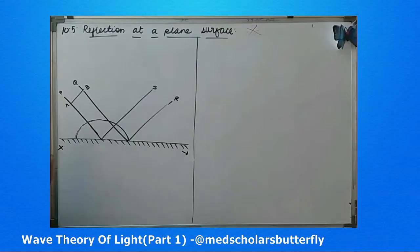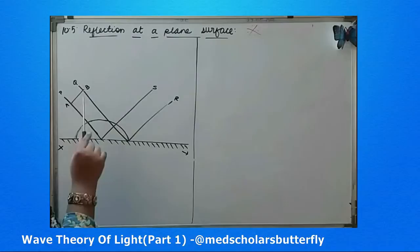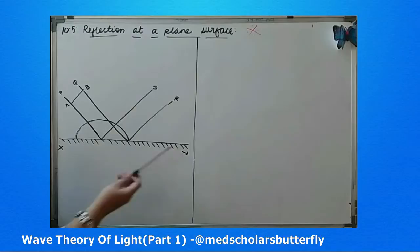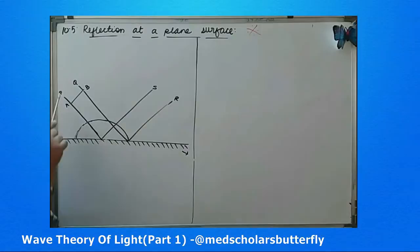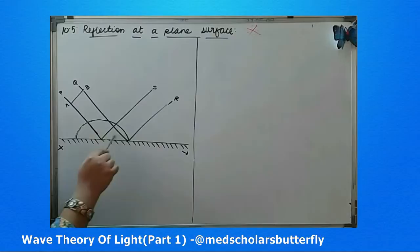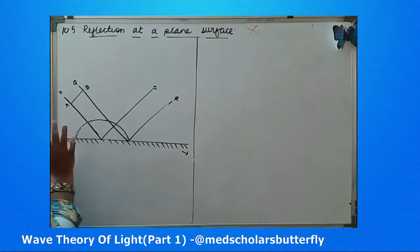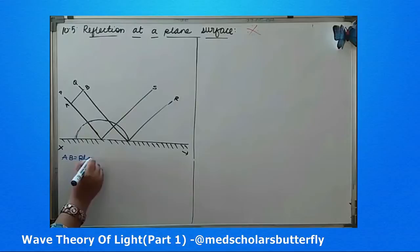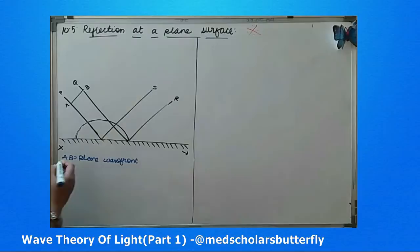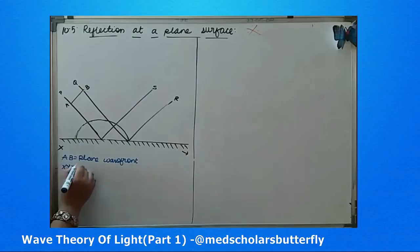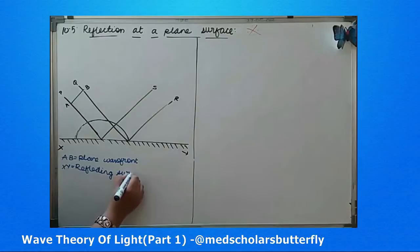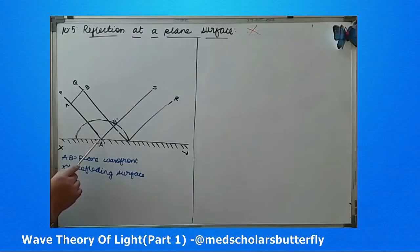Reflection at a plane surface: this is a plane wavefront and PANQB are parallel rays reaching XY, which is the reflecting surface. This is the incident light and this is the reflected light. The incident light will reach the reflecting surface and get reflected. AB is the plane wavefront and XY is the reflecting surface. From A' and B' they will start behaving as secondary sources of light and get reflected. There will be a hemisphere formed from A with center, and it will have a radius CT.